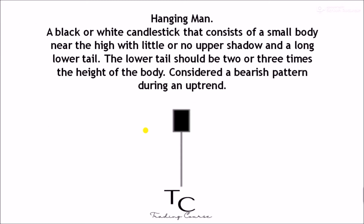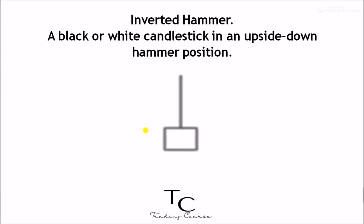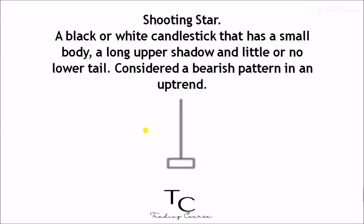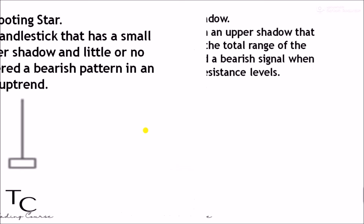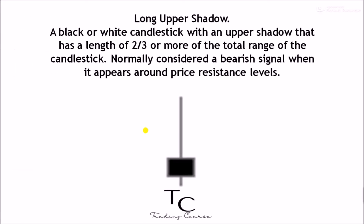Hammer is considered a bullish pattern during a downtrend. Hanging man — a black or white candlestick that consists of a small body near the high with little or no upper shadow and a long lower tail; the lower tail should be two or three times the height of the body. Considered a bearish pattern during an uptrend. Inverted hammer — a black or white candlestick in an upside-down hammer position. Shooting star — a black or white candlestick that has a small body, a long upper shadow and little or no lower tail. Considered a bearish pattern in an uptrend. Long upper shadow — a black or white candlestick with an upper shadow that has a length of two-thirds or more of the total range of the candlestick.